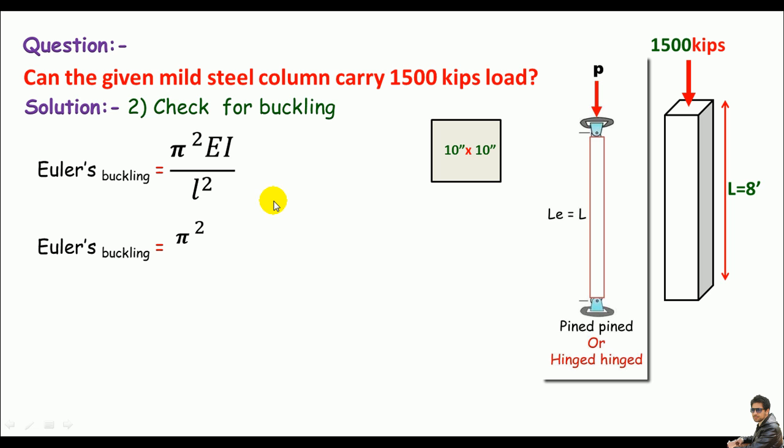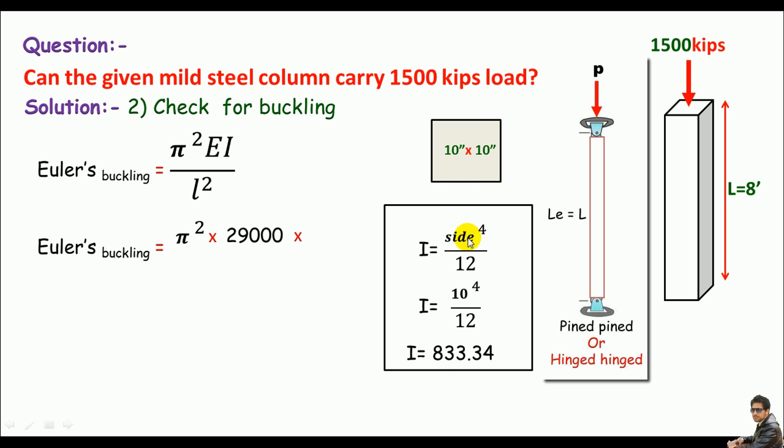Let's do some plug and chugging. π² times the modulus of elasticity. We are using A36 mild steel, so the modulus of elasticity of A36 is 29,000 ksi times the moment of inertia. The moment of inertia of a square section is side to the power 4 divided by 12. Put 10 inches as the side, we can get the moment of inertia equals 833.34 inches to the power 4.